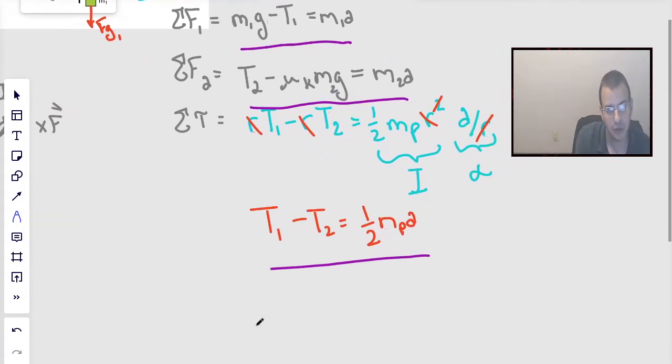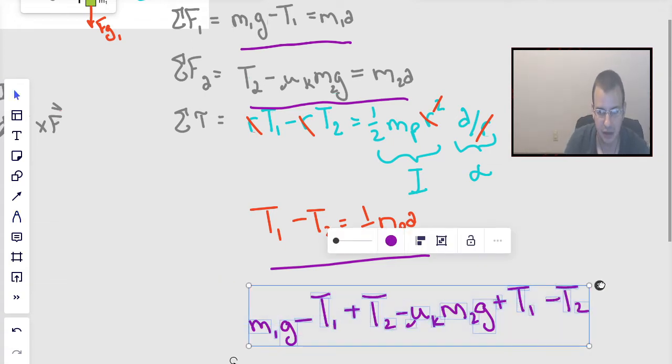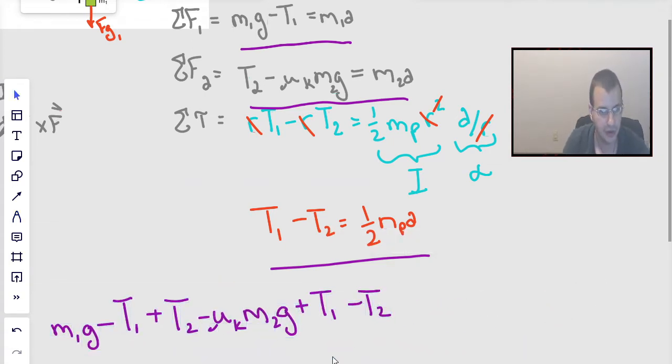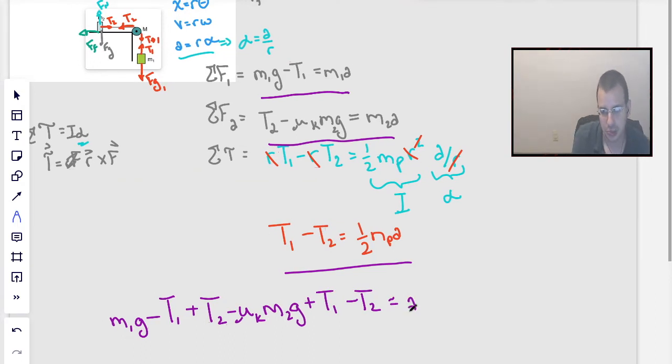So the left side, we get mass 1 times gravity minus tension 1 plus tension 2 minus coefficient of kinetic friction times mass 2 times gravity plus tension 1 minus tension 2. That's the whole left side of all these three equations added together.